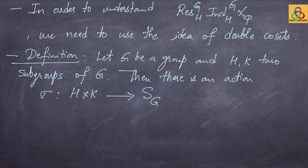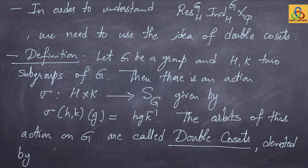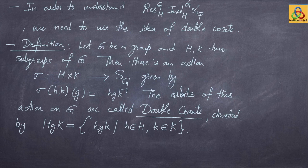There is an action sigma of the product group H × K on the group G, given by: (h, k) acting on g gives h·g·k⁻¹. One can verify this is a group action. The orbits of this action are called double cosets, denoted HgK, which as a set is {hgk : h ∈ H, k ∈ K}. The set of orbits is denoted H\G/K.